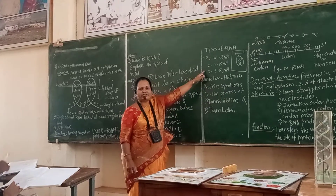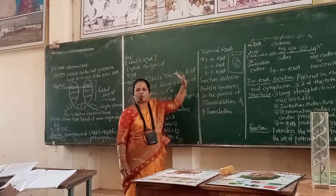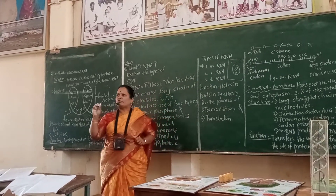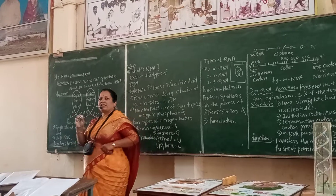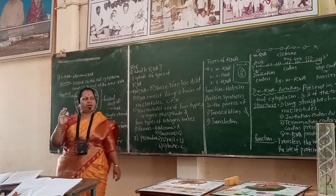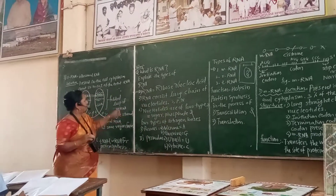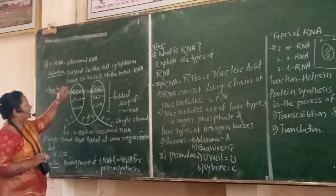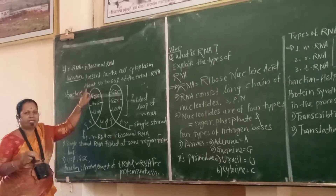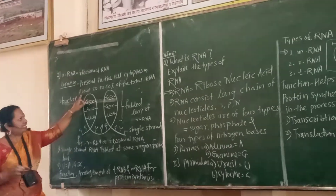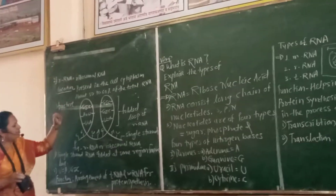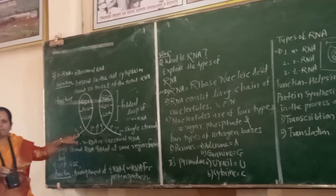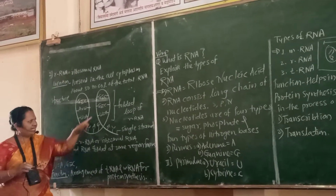This is a type of RNA called ribosomal RNA. Ribosomal RNAs are about 50 to 60% of the total RNA present in the cytoplasm, and it consists of a straight long chain.